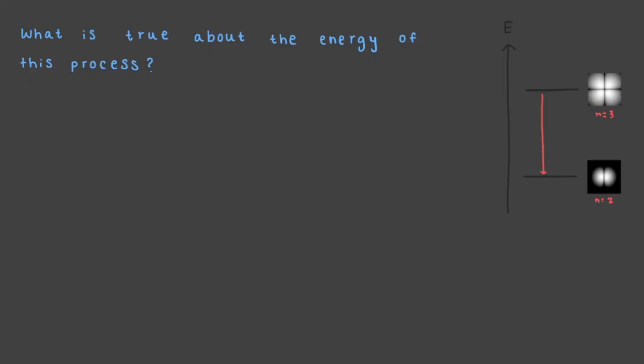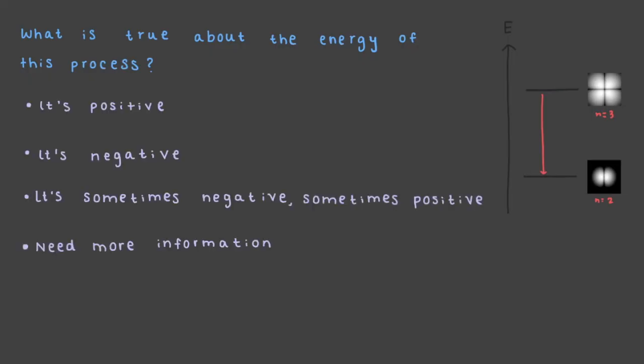What is true about the energy of this process? When our electron wave goes from an n equals 3 wave to an n equals 2 wave, energy is being released and the arrow is going down. Therefore, the total change in energy is negative.